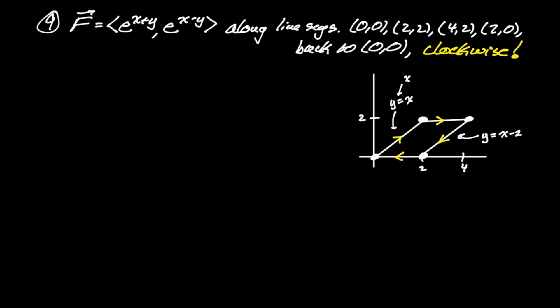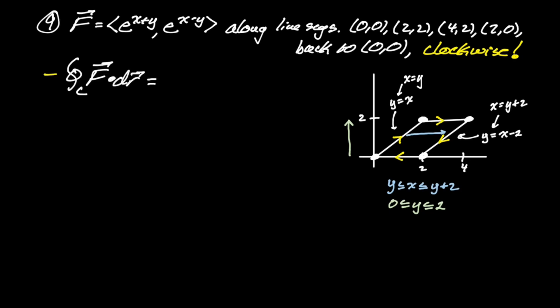Since it's horizontally simple, I'll swap to x = y and x = y + 2, and integrate dx first from left to right, then dy from bottom to top. Going left to right means x goes from y to y + 2, and dy goes from 0 to 2. This avoids doing two separate double integrals. Don't forget the negative sign for the clockwise orientation. So the bounds are 0 to 2 for y, and y to y + 2 for x.